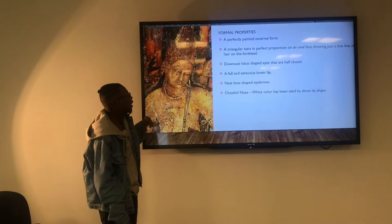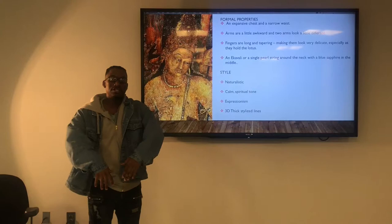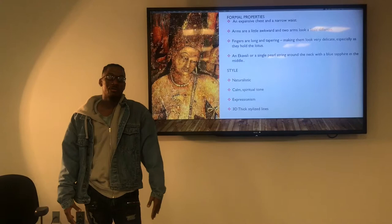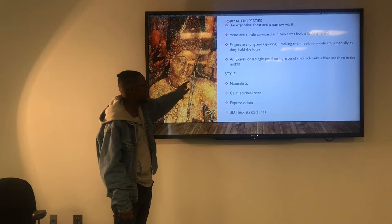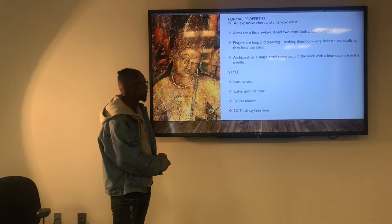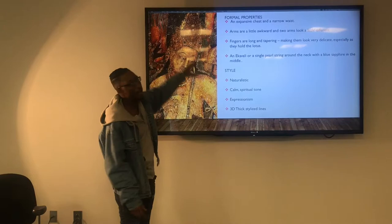More formal properties include an expansive chest. The arms are extremely long because in Indian culture, arms were representational of elephant tusks, and the fingers are long and tapering as well. There is a pearl string around the neck, which ties into the culture of the Bodhisattva. In terms of style, it is naturalistic with a calm, spiritual tone — a lot of expressionism with very 3D, thick stylized lines throughout the portrait.